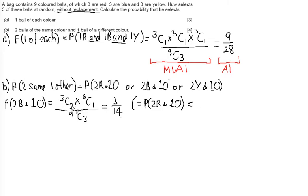So these three probabilities are all actually equal. So I don't really need to go through the process and show each time that they are the same. So now what I can say at the end is probability of two the same and one other.